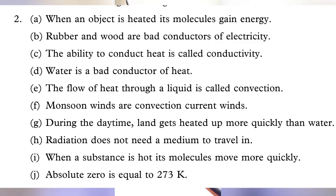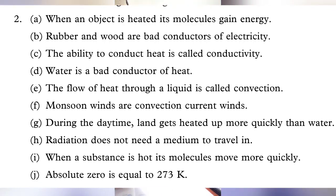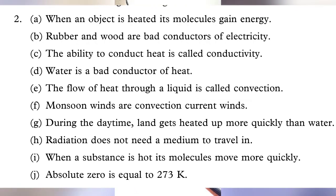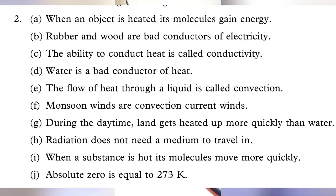Correct the false statements. Statement one says: when an object is heated, its molecules lose energy. Correction: molecules gain energy, not lose. Statement two: rubber and wood are good conductors of electricity. Correction: they are bad conductors of heat. Statement three: the ability to conduct heat is called radio activity. Correction: it is called conductivity. Statement four: water is a good conductor of heat. Correction: water is a bad conductor of heat. Statement five: the flow of heat through a liquid is called radiation. Correction: it is called convection.